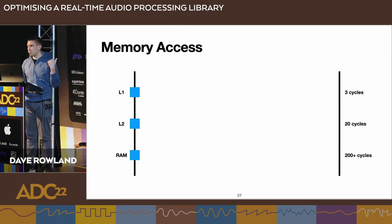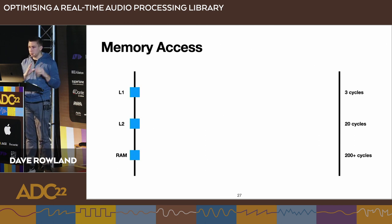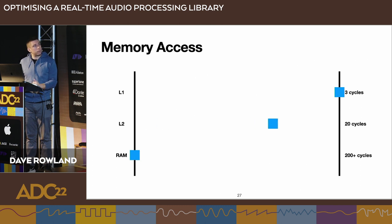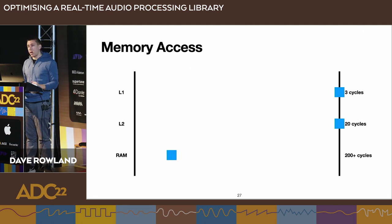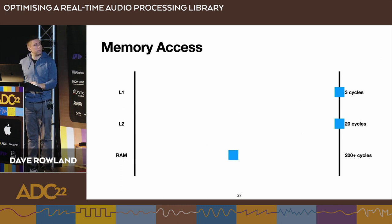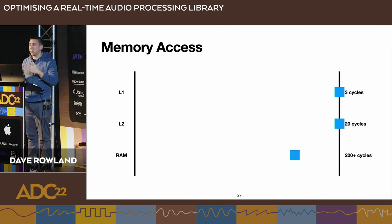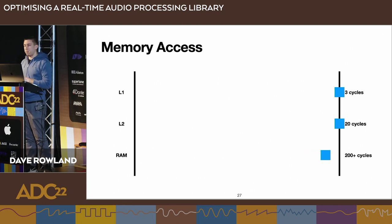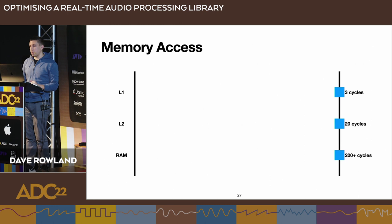This animation—originally from Mike Acton, also given by Scott Meyers—illustrates how long memory access takes. L1 cache is nearly instant, just a few cycles. L2 cache is manageable but considerably longer. RAM takes an absolute age. Whilst waiting for RAM, your CPU is effectively doing nothing. This is where most performance is lost in modern systems.